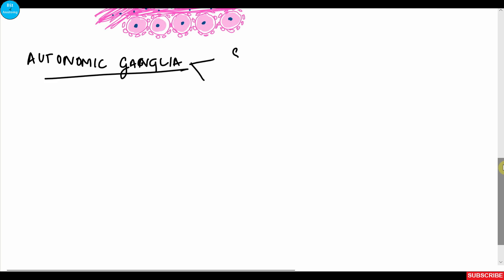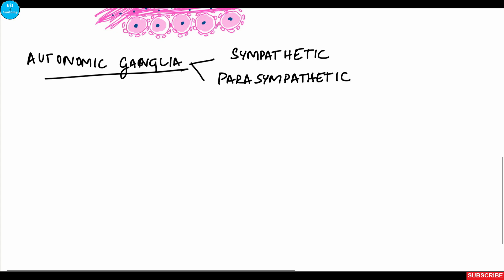Autonomic ganglia are further divided into sympathetic and parasympathetic ganglia, and structurally both are quite similar. The cell bodies of neurons in autonomic ganglia are very small compared to those in sensory ganglia, and they are multipolar in nature. The polarity is difficult to appreciate on routine hematoxylin and eosin stained slides, but the cell bodies of multipolar neurons have multiple edges compared to those in sensory ganglia.